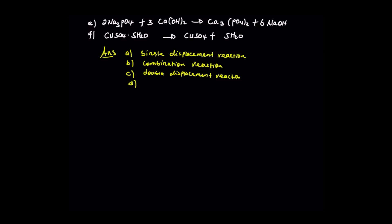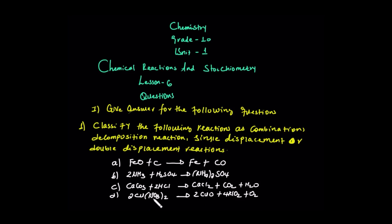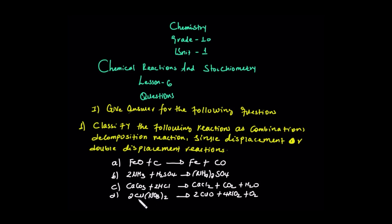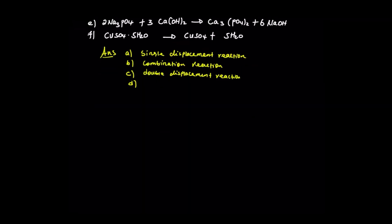For D, copper nitrate gives copper oxide, nitrogen dioxide, and oxygen. This is a decomposition reaction — a single compound breaking down into two or more simpler compounds or elements.